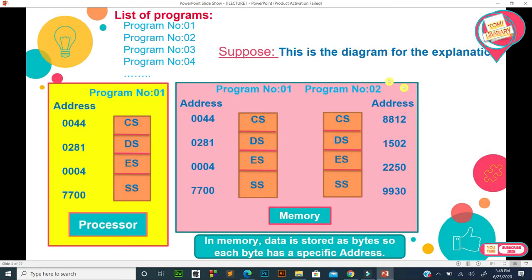Here is a diagram for explanation. There is a list of programs — suppose 4 programs total. When program number 1 is loaded from processor to memory, the memory is divided into segments. In 8088 architecture, memory has 4 different types of segments: code segment, data segment, extra segment, and stack segment. Data is stored in memory as bytes, and each byte has a specific address. Each segment has its own address stored in the segment register.